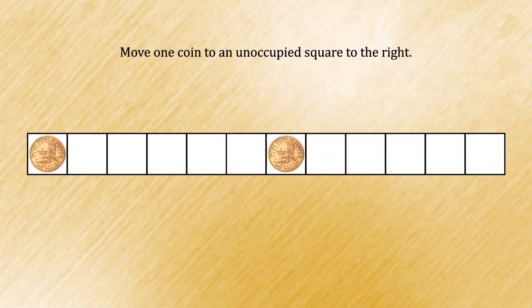In particular, the active player will choose one coin and move it to an unoccupied square to the right. That player's turn will then end, and it will become the next player's turn, where they have the same task in front of them.